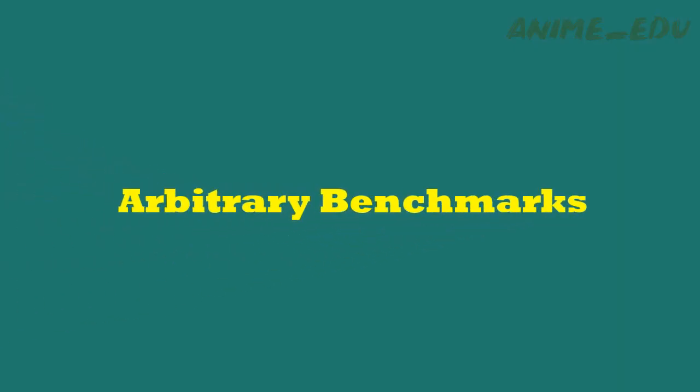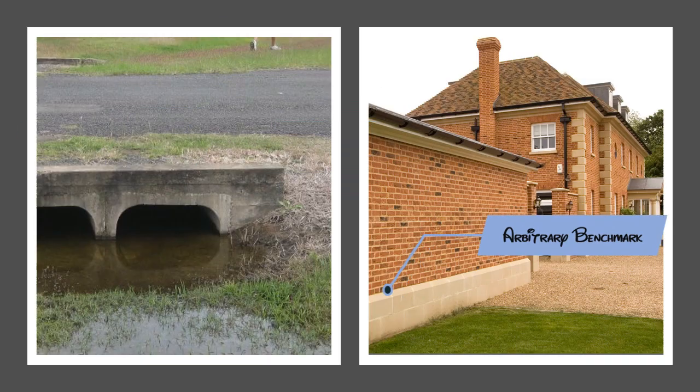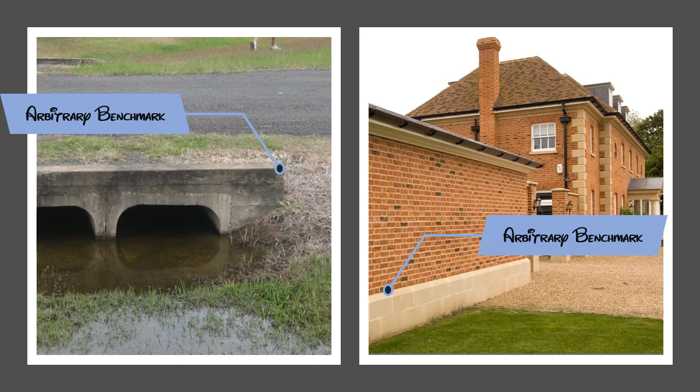Arbitrary Benchmark — sometimes, the nearby permanent point like the plinth of a building or corner of a culvert is taken as a benchmark for the construction of nearby structures.